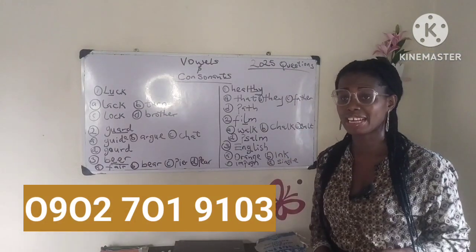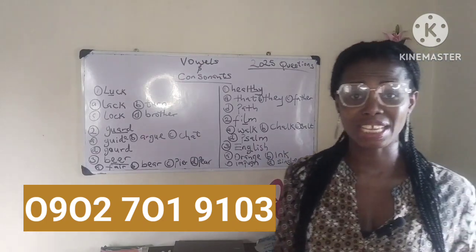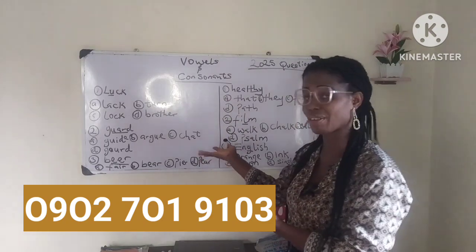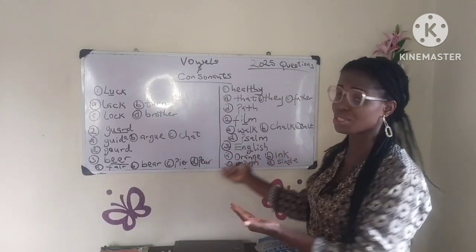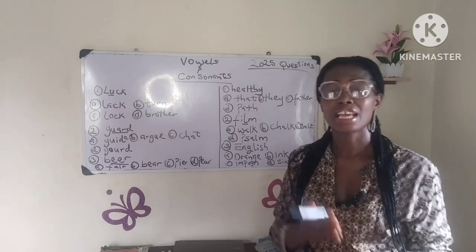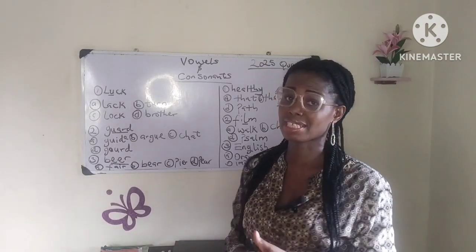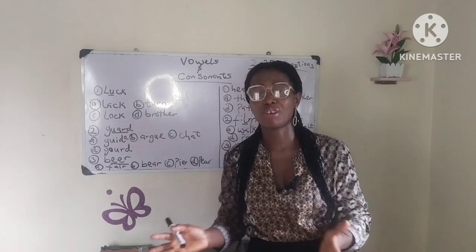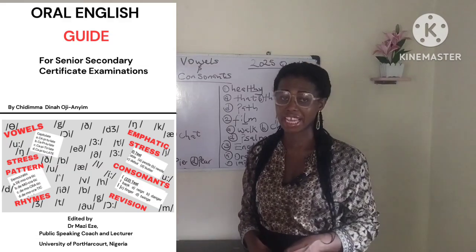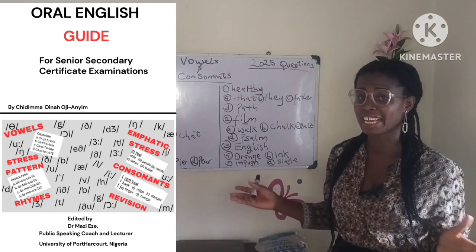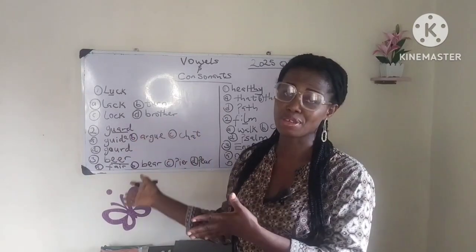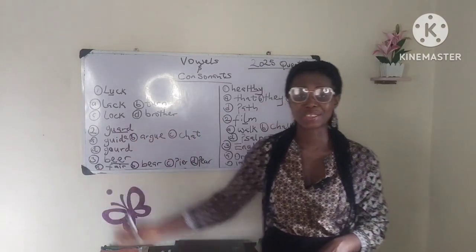Now let's look at some questions picked from the past questions — JAMB UTA 2025 past questions. We have three questions on vowel sounds and three questions on consonant sounds in 2025, and those are the questions I want us to consider in this video. If you have already purchased a copy of our English guide, answering these questions won't be a problem, because in our English guide I gave you the strategies that will help in answering questions on oral English.